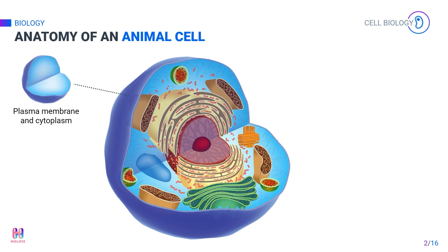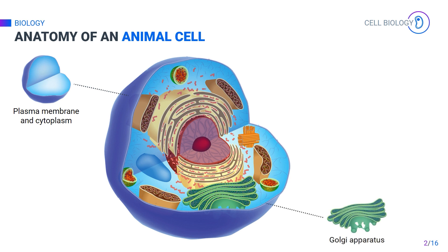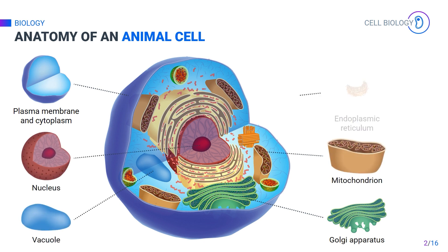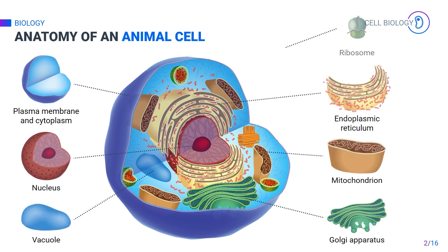This is the outer membrane called the cell or plasma membrane, which surrounds the protoplasm. The protoplasm consists of the cytoplasm and the nucleus. Various organelles found within the cytoplasm include the Golgi apparatus, mitochondria, the nucleus, vacuoles, endoplasmic reticulum, and ribosomes. Most of the activity in a cell takes place in the cytoplasm.